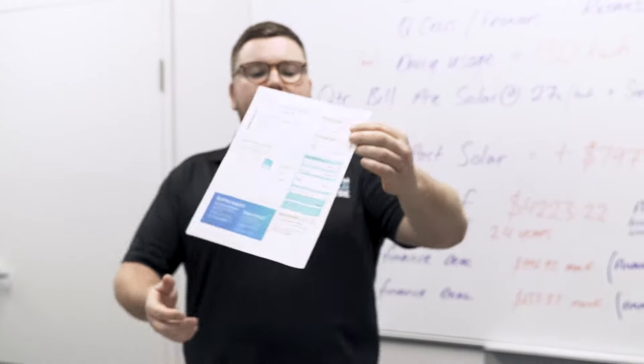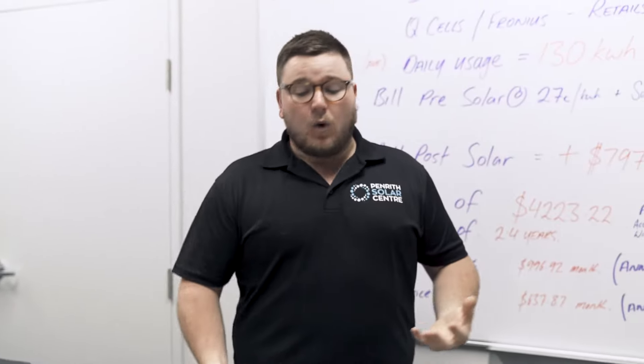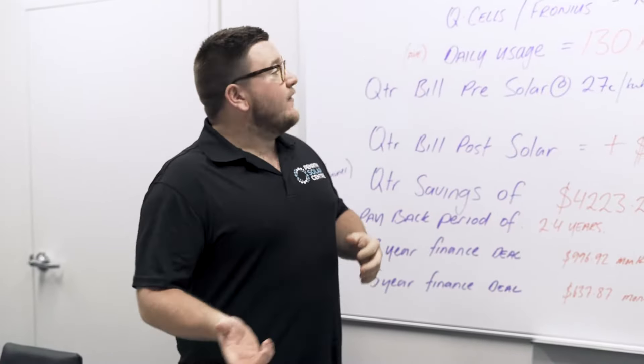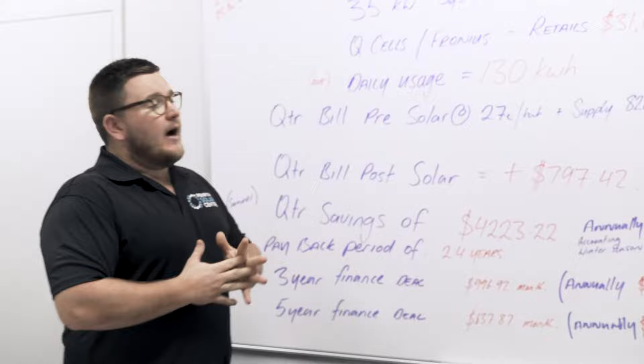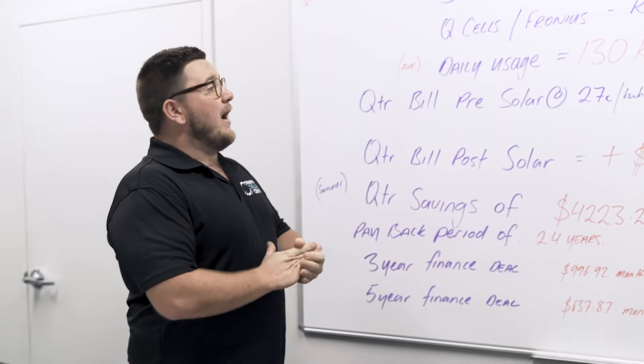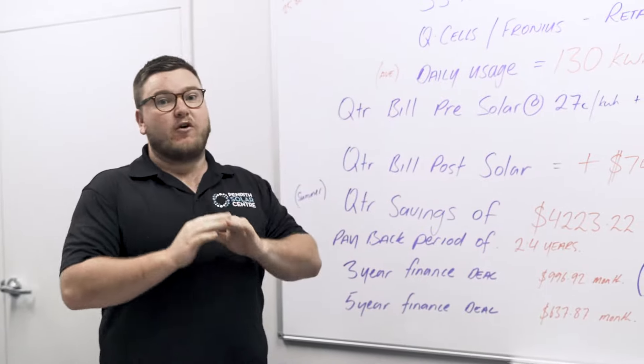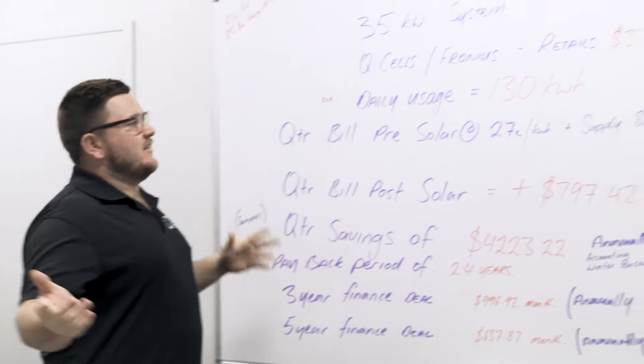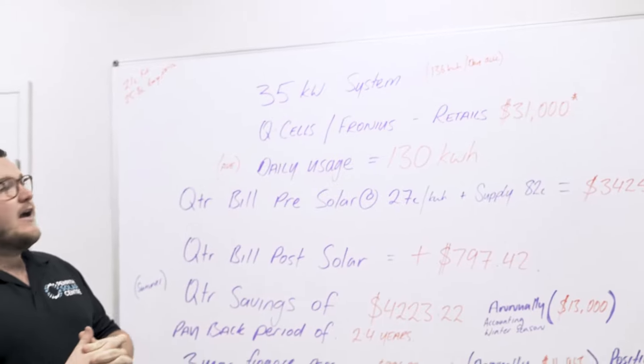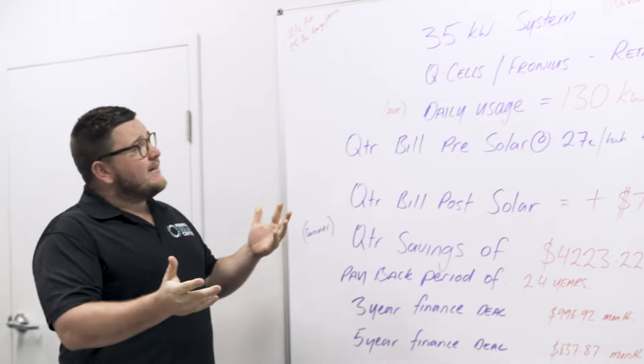Now I want to break that down for you guys. I want to show you how that actually works. It's all well and good to get that, but how did we get there? So I've done a case study on our solar system here. We have a 35 kilowatt solar system which is massive, but our daily usage is also massive. We use six to seven times what we expect a house to use. So let me break that down for you.